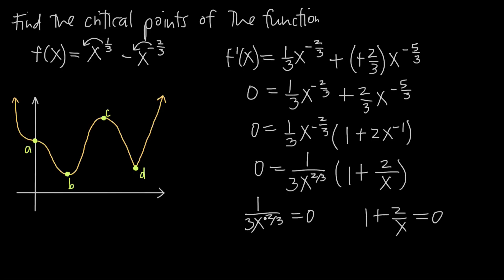For the first equation, 1 over (3x to the 2/3) equals zero — there's no value we can plug in for x to make this true. If x equals zero, the equation is undefined because we'd have zero in the denominator. So x equals zero makes the derivative undefined and is therefore a potential critical point. For the second equation, subtracting 2/x gives 1 equals negative 2/x, then multiplying both sides by x gives x equals negative 2, which makes the derivative equal to zero — another potential critical point.